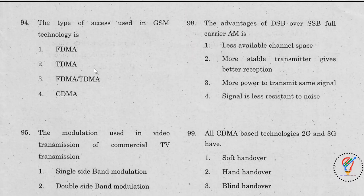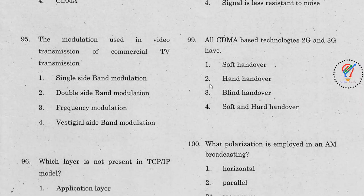Question 94: The type of access used in GSM technology is FDMA/TDMA — answer is option 3. Question 98: The advantage of DSB over SSB full-carrier AM — option 3 is the right answer. Question 95: The modulation used in video transmission of commercial TV is vestigial sideband modulation. Question 99: Both 2G and 3G CDMA technologies have soft handover.